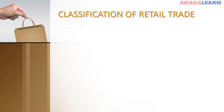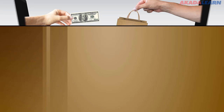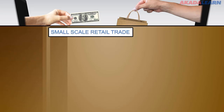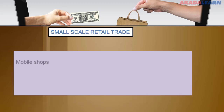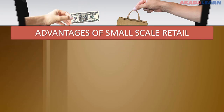Classification of Retail Trade: Retail Trade is classified into two — Small Scale Retail Trade and Large Scale Retail Trade. Small Scale Retail business is the means of trading with a small scope of operation. Little capital can be used to set up a Small Scale Retail business. Examples of Small Scale Retail Traders are: Mobile Shops, Street or Roadside Trading, Kiosks, Hawking, Small Stores, and Market Traders.